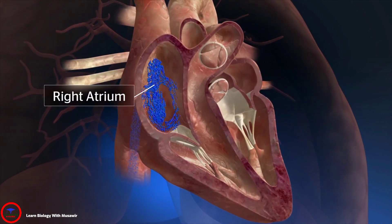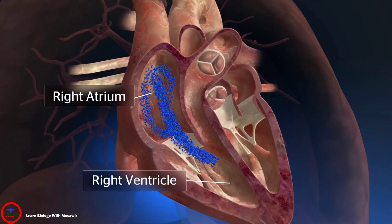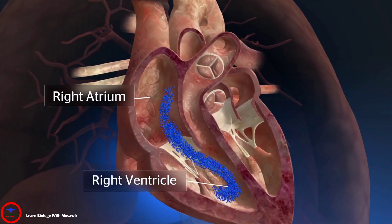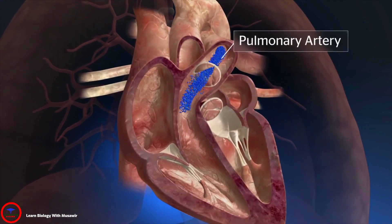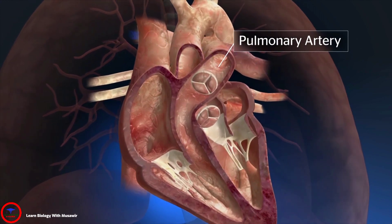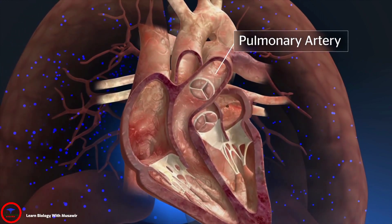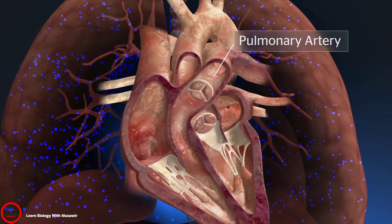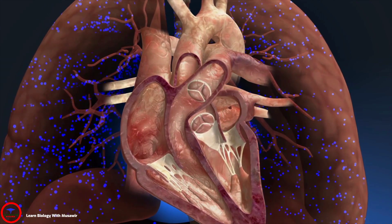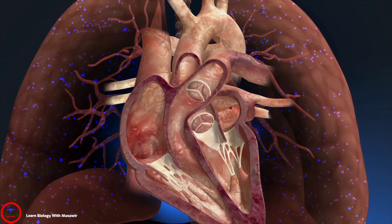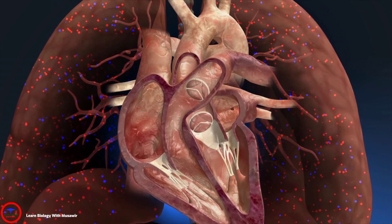The blood flows from the right atrium into the right ventricle, then leaves the heart through the pulmonary artery and is transported to the lungs where it picks up oxygen. Gaseous exchange then takes place in the lungs where carbon dioxide is released from the blood and oxygen taken up.